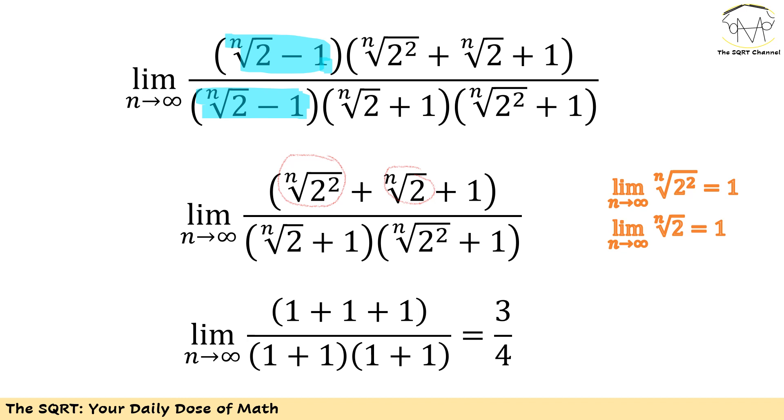For the top of this fraction I have 1 plus 1 plus 1, and I have (1 + 1)(1 + 1) for the bottom, and overall I have 3 over 4 for the final answer.